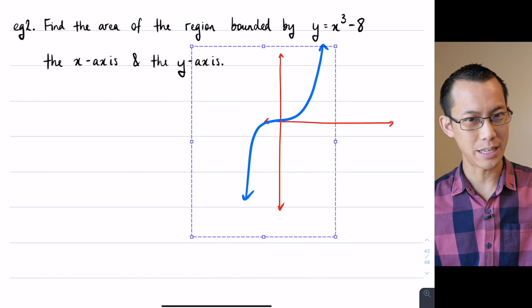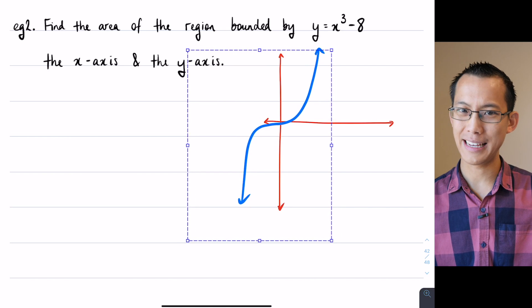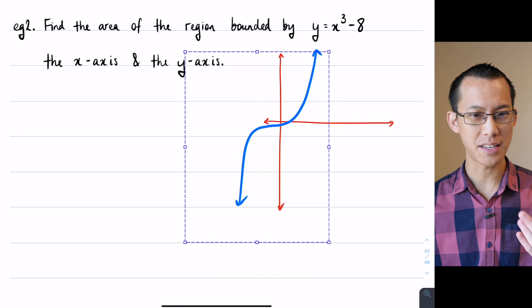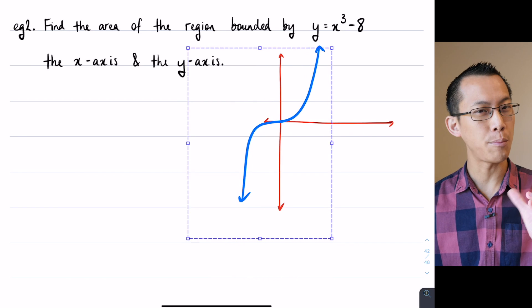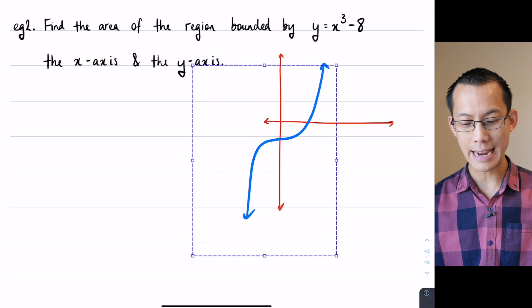But I don't have y equals x cubed, I've got y equals x cubed minus 8. So if you think all the way back to the beginning of last year when we're looking at functions and how to graph functions when they've been shifted, you can see that minus 8 is just going to bring this guy down 8 units.